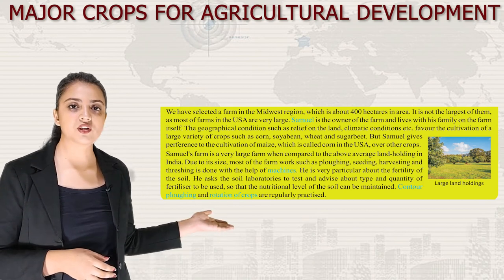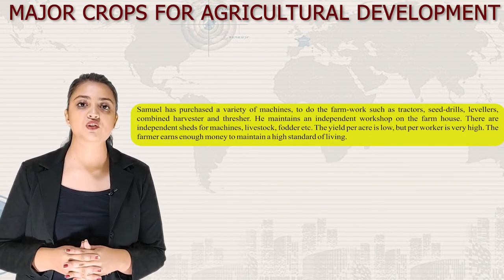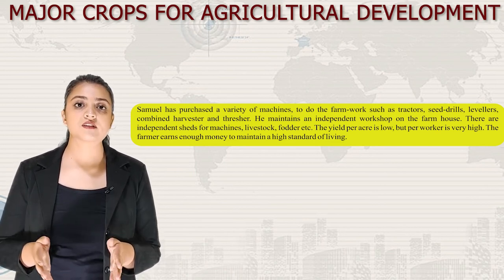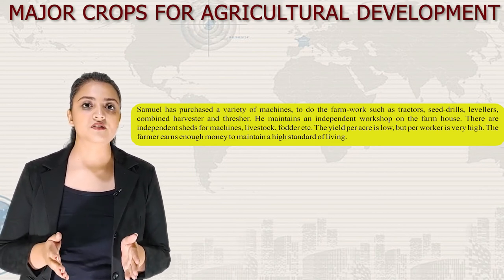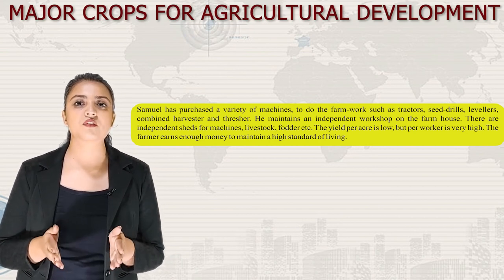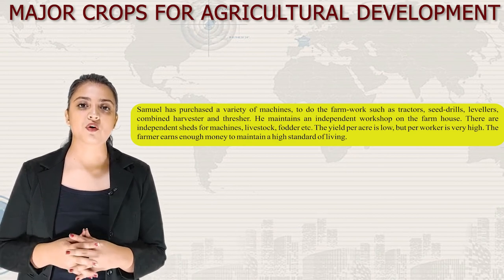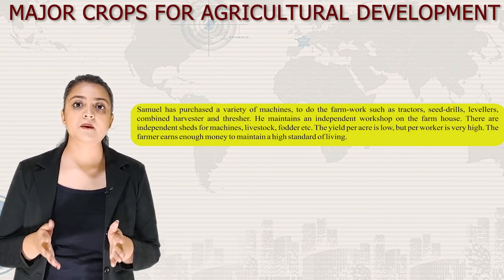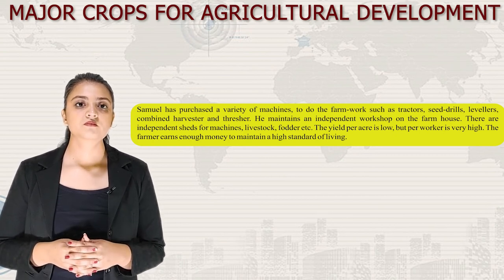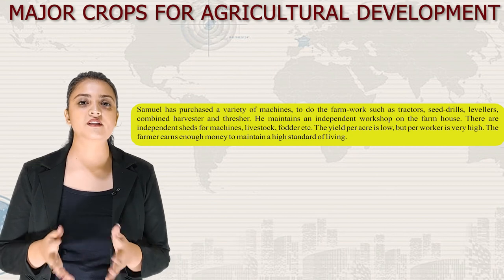Samuel has purchased a variety of machines: tractors, seed drills, levellers, and combined harvester-threshers. He maintains an independent workshop on the farmhouse, with separate sheds for machines, livestock and fodder. The yield per acre is low but per worker is very high. The farmer earns enough money to maintain a high standard of living.